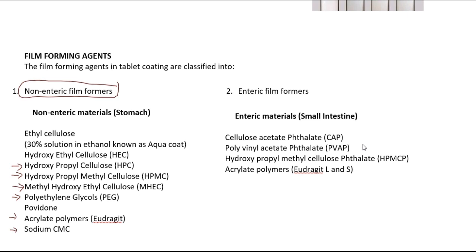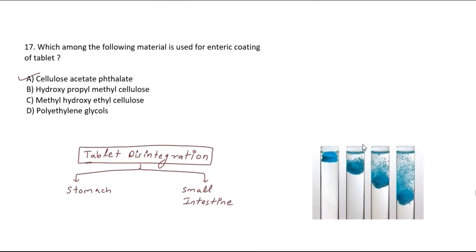Enteric film formers disintegrate in the small intestine. Examples include cellulose acetate phthalate, polyvinyl acetate phthalate, hydroxypropyl methyl cellulose phthalate, and acrylate polymers. In the case of enteric material, the answer is cellulose acetate phthalate.